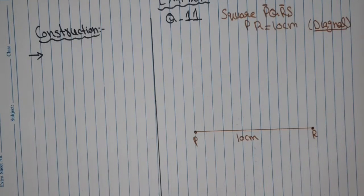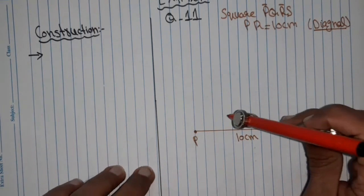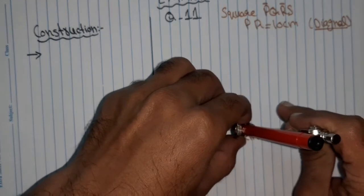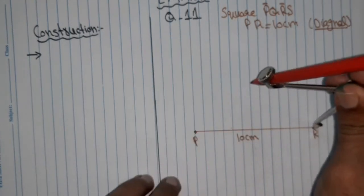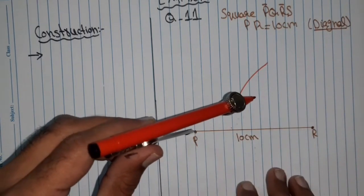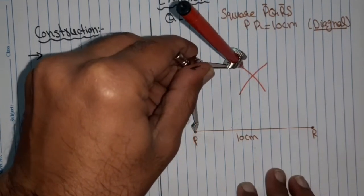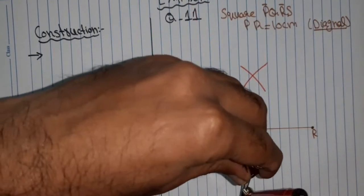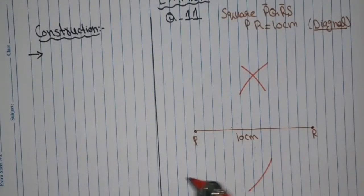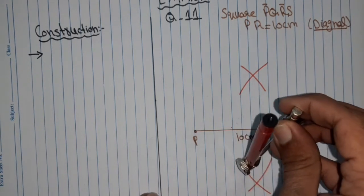We will draw the perpendicular bisector of PR. We'll open the compass to the length more than half, more than 5 cm, and draw an arc. Similarly we will place the compass at point P and draw another arc, and similarly at this point.